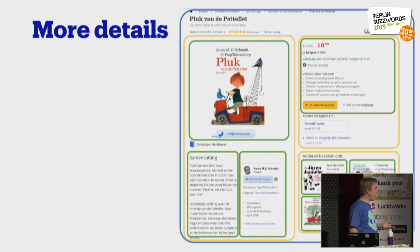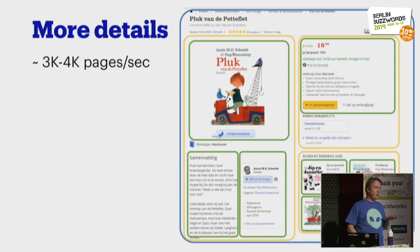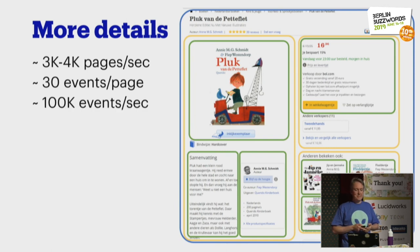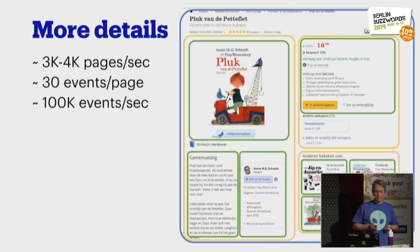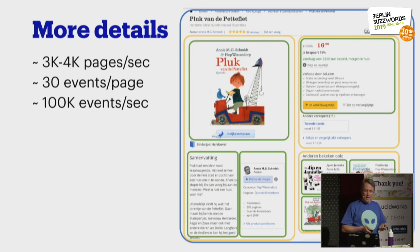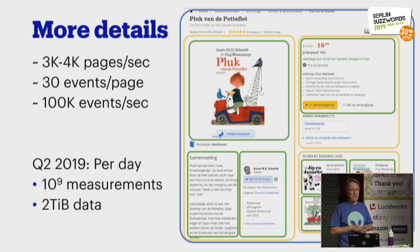It's not uncommon that our website does 3,000 to 4,000 pages per second. If we measure everything on all pages, it should yield something like 30 events per page, which is about 100k per second. The project has been partially implemented — not all aspects of the website have been tagged yet — but around this time we're already passing one billion measurements per day.